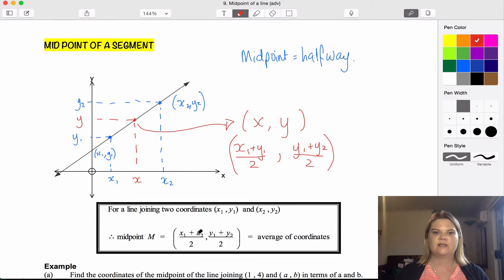That's exactly what I've written down here. So for a line joining two coordinates (x1, y1) and (x2, y2), the midpoint—we use M to show the midpoint—is x1 plus x2 over 2. Just realized I made an error there.